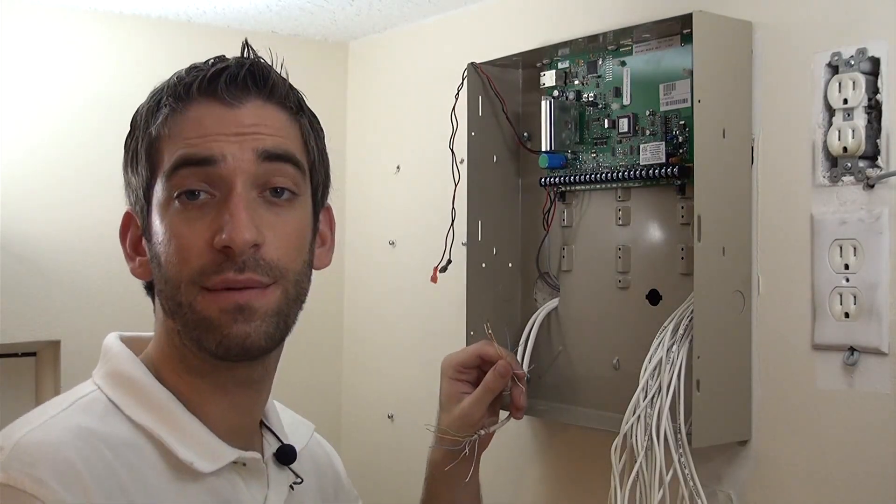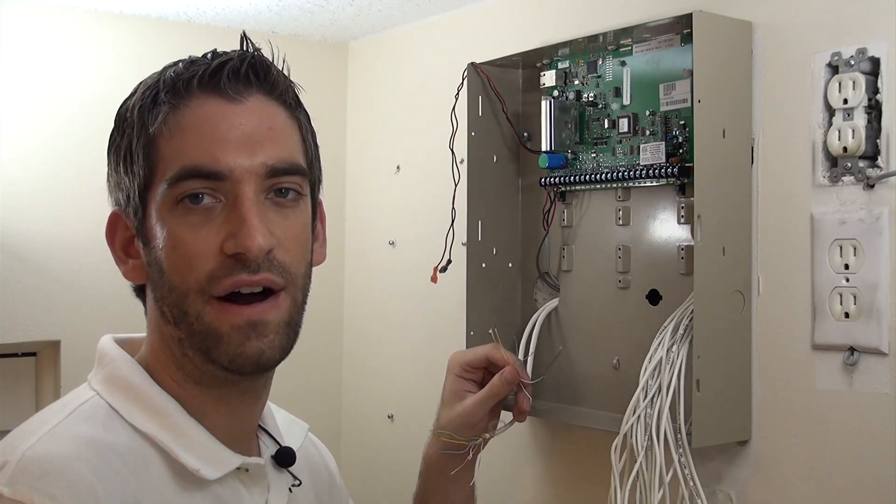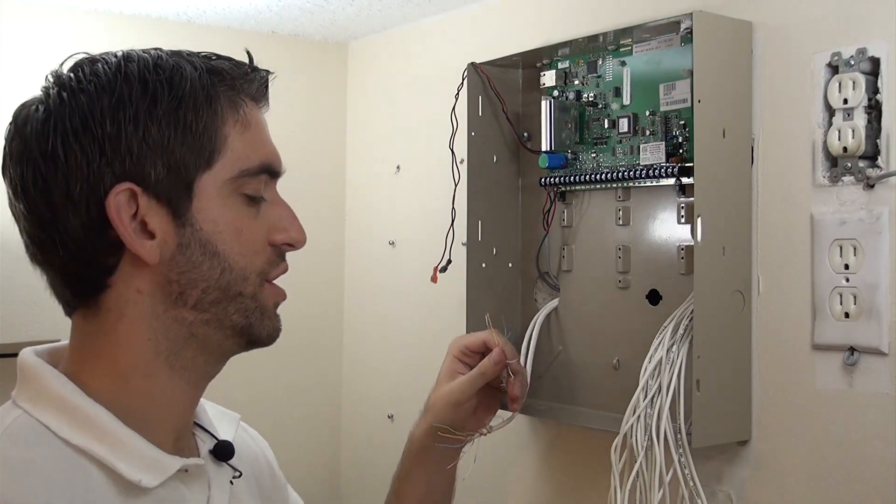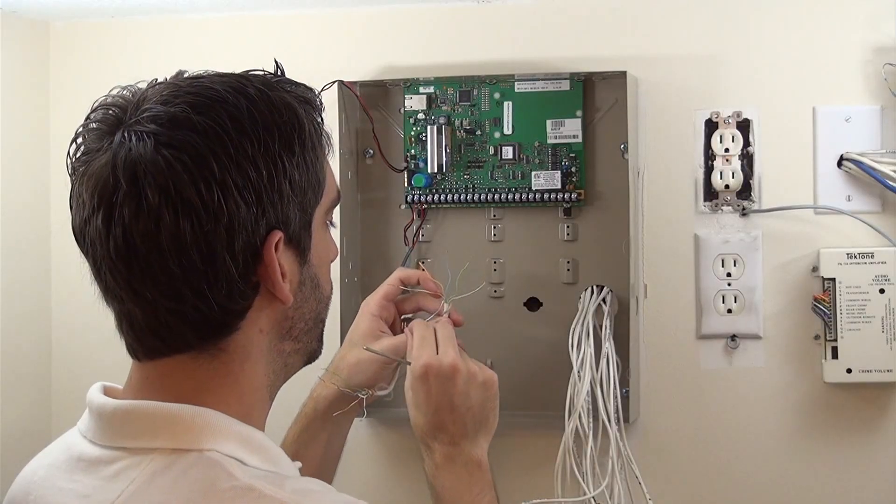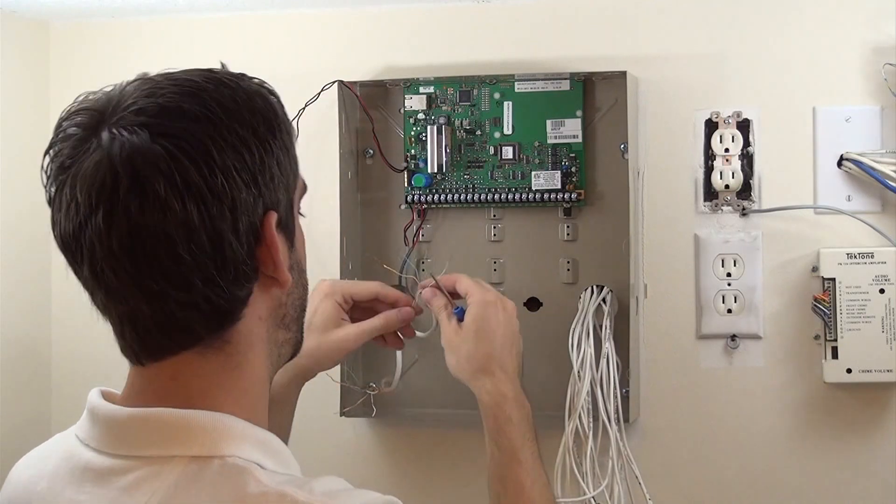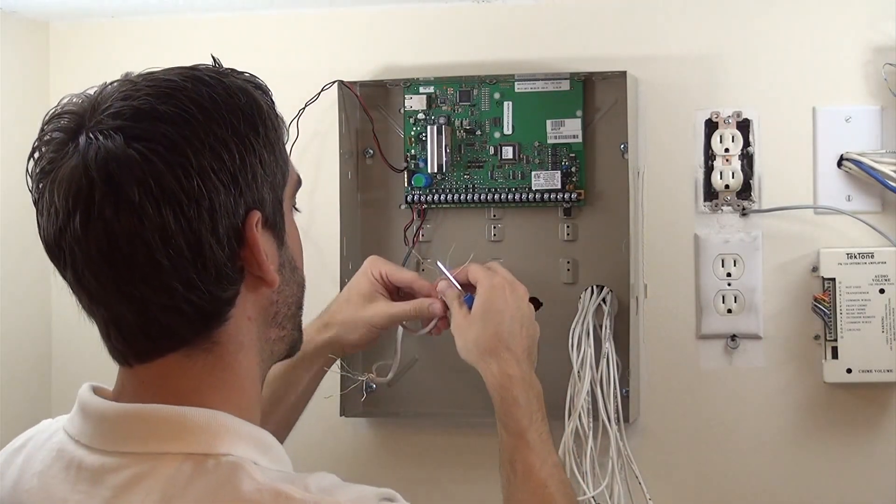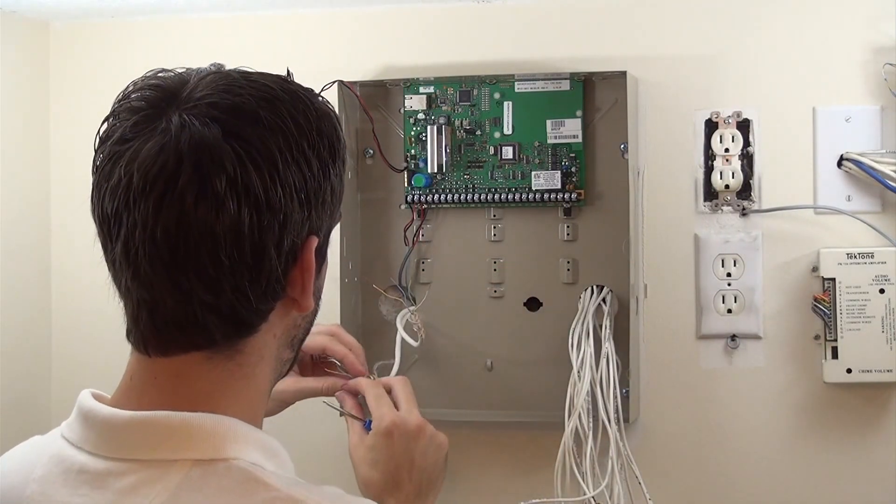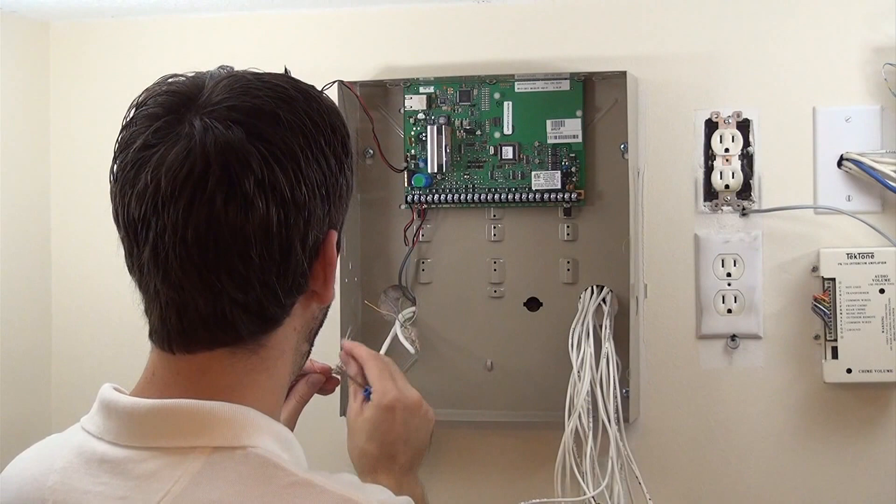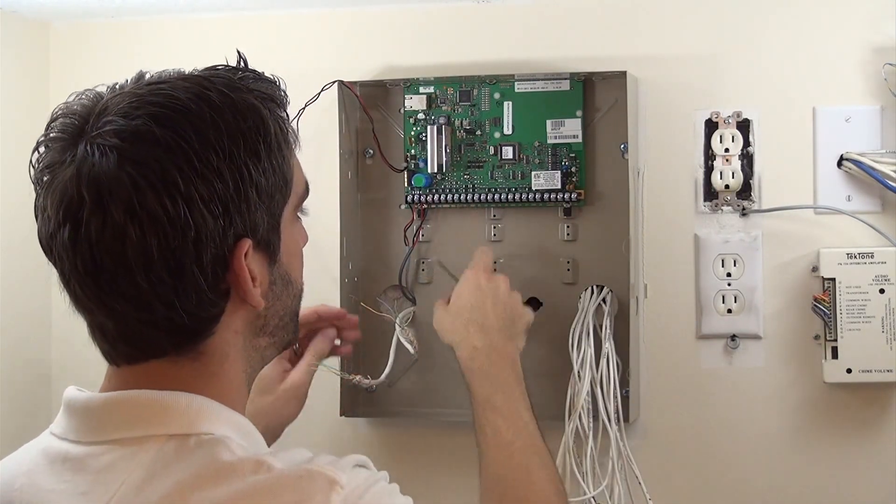The Honeywell keypads that we're going to be putting in, a 6160V and a Tuxedo Touch Wi-Fi, are simple four-wire connections. So we're going to take two of our connections on here. I'm going to choose the blue and white and yellow and white, and we're just going to wrap these down. We're going to run our two keypads here in parallel on our ECP terminal, four, five, six, and seven.